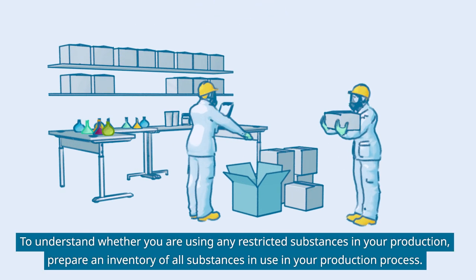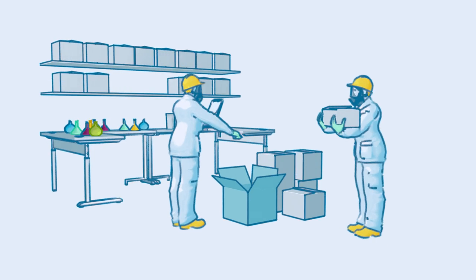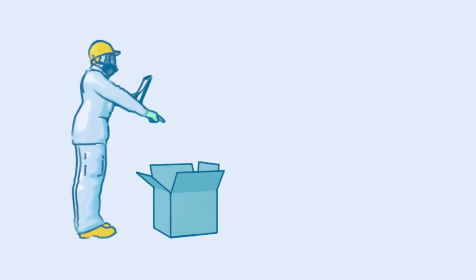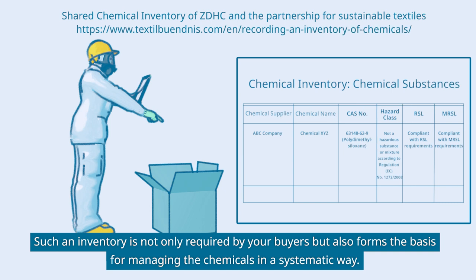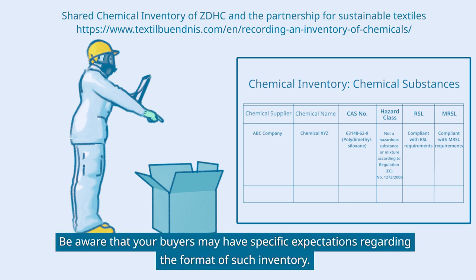To understand whether you are using any restricted substances in your production, prepare an inventory of all substances in your production process. Such an inventory is not only required by your buyers but also forms the basis for managing the chemicals in a systematic way.